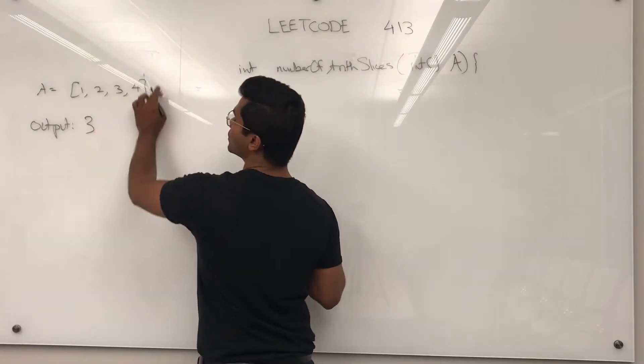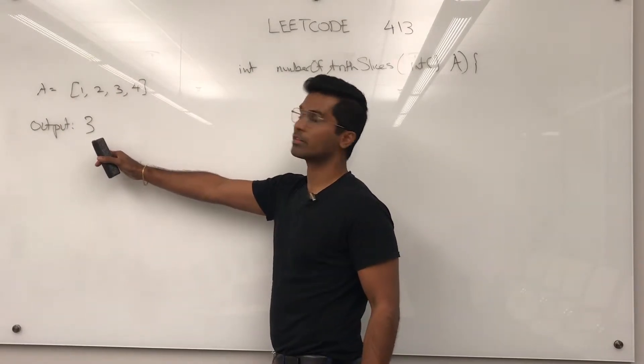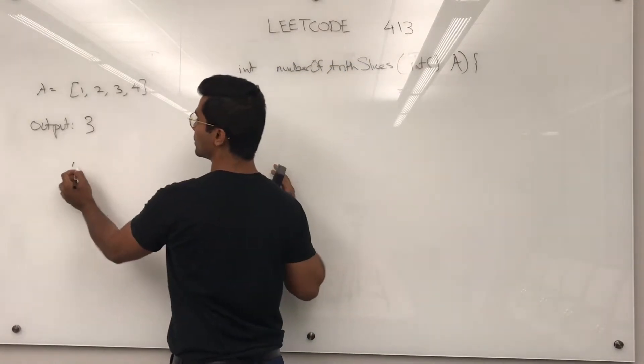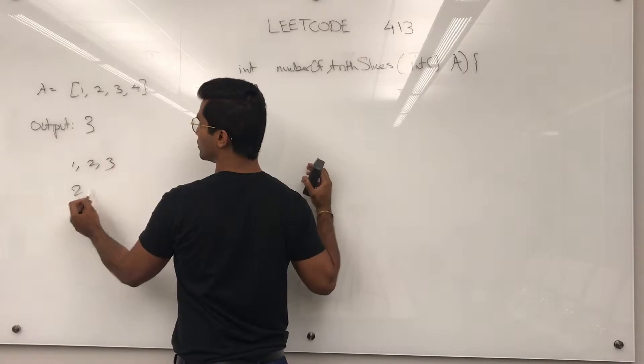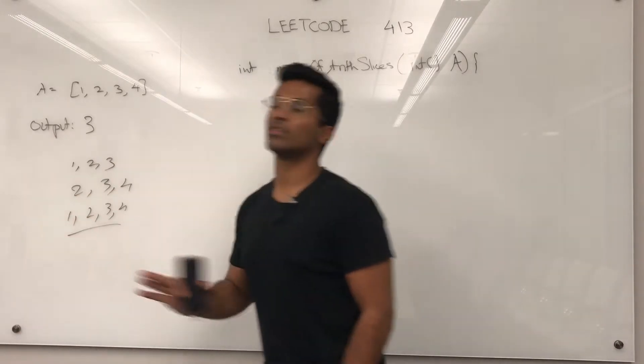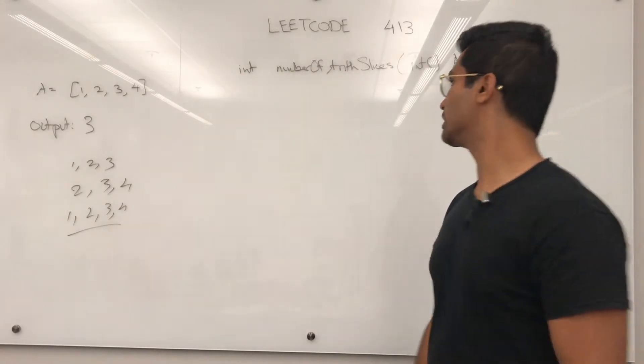So the input is an integer array, the output is going to be how many arithmetic sequences can we get from this. So the first one can be 1, 2, 3, then 2, 3, 4, and also 1, 2, 3, 4. What they want is how many we can have in total.